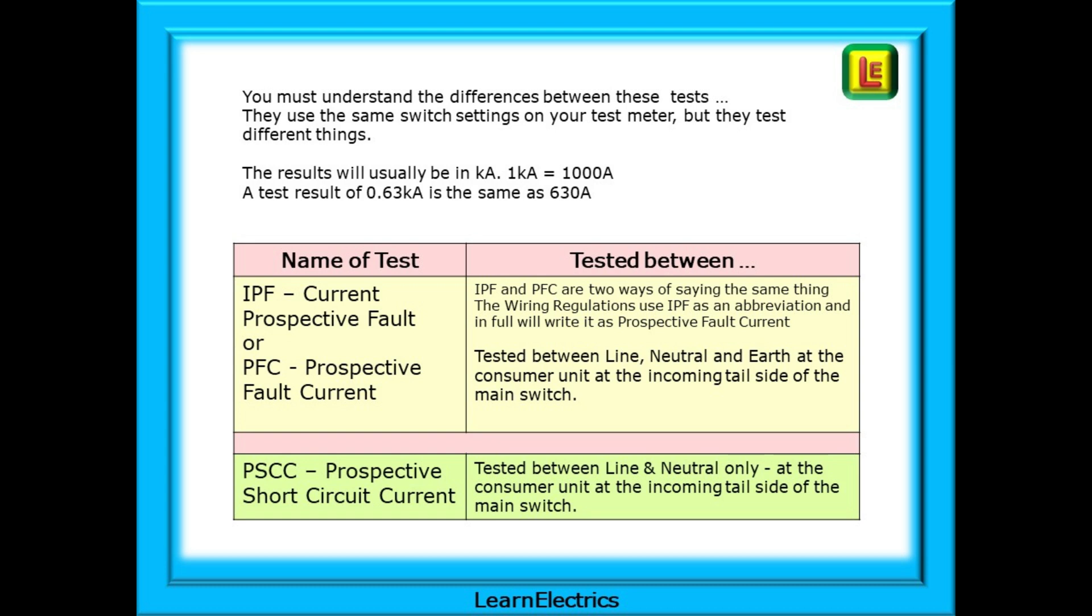IPF and PFC are two ways of seeing the same thing. The wiring regulations use IPF as an abbreviation and in full will write it as Prospective Fault Current. It is tested between line, neutral and earth at the consumer unit at the incoming tail side of the main switch. It tells us how much current will flow to earth during a fault.